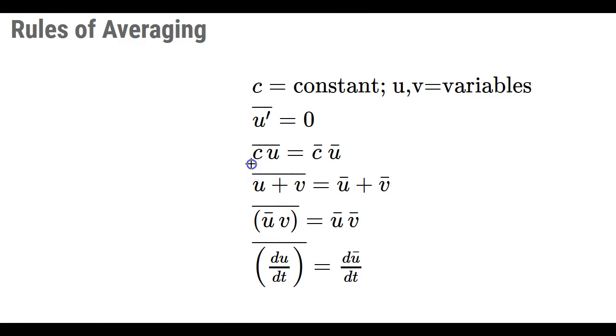The average of the sum of two variables is just the sum of the average of the two variables. And the average of a product of the average value of one variable and another variable is just the product of the averages of the two variables. Note that the average of a variable is just a constant.